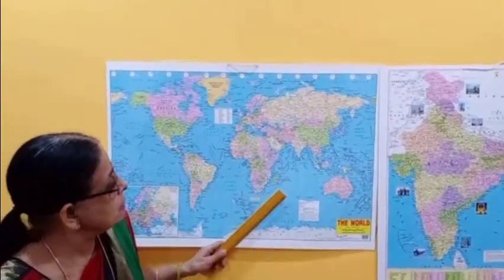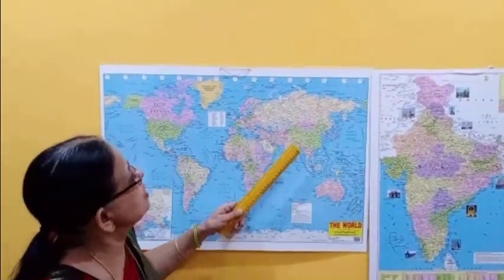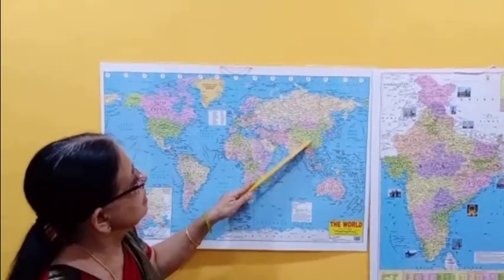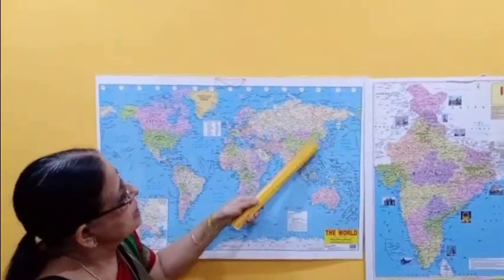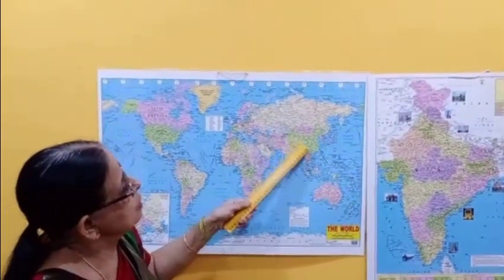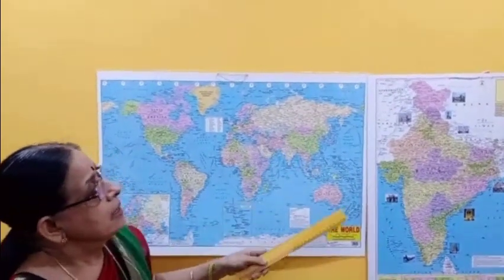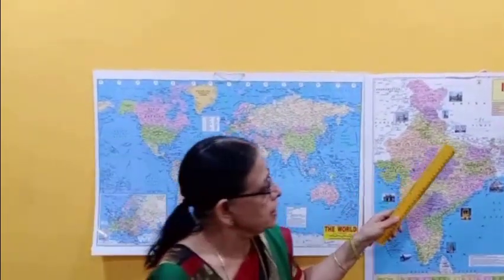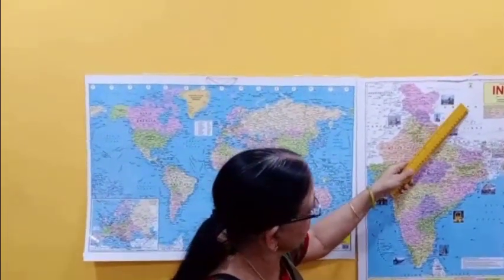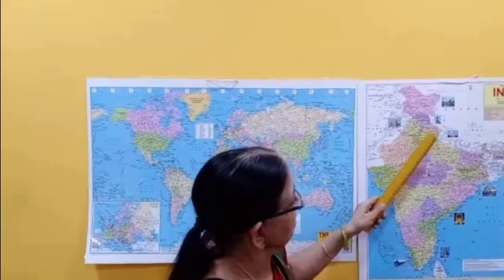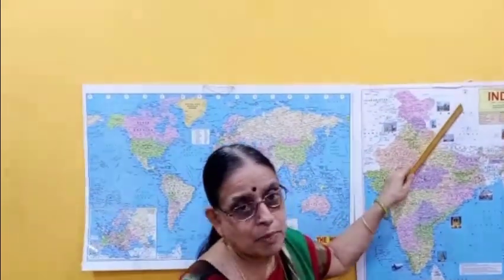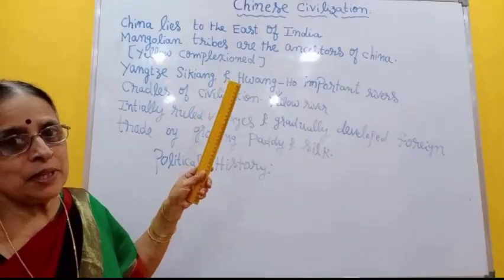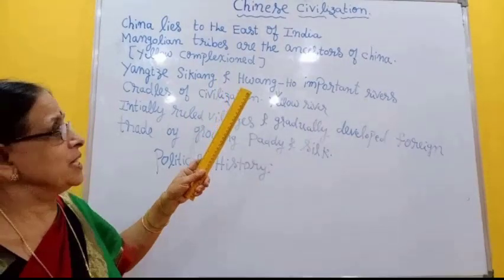This is the world map. China lies in the Asian continent, here in the green shaded part. You can see the green shaded part is China. You can clearly see that China lies to the east of India, the eastern part of India. We have learnt about the position of China.